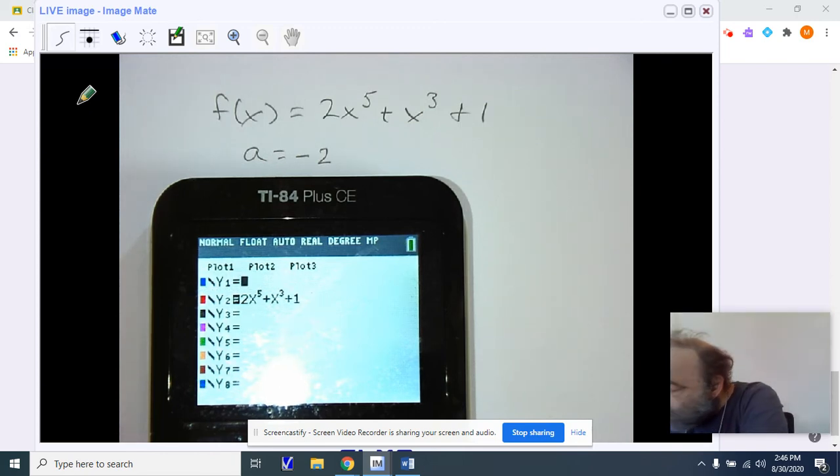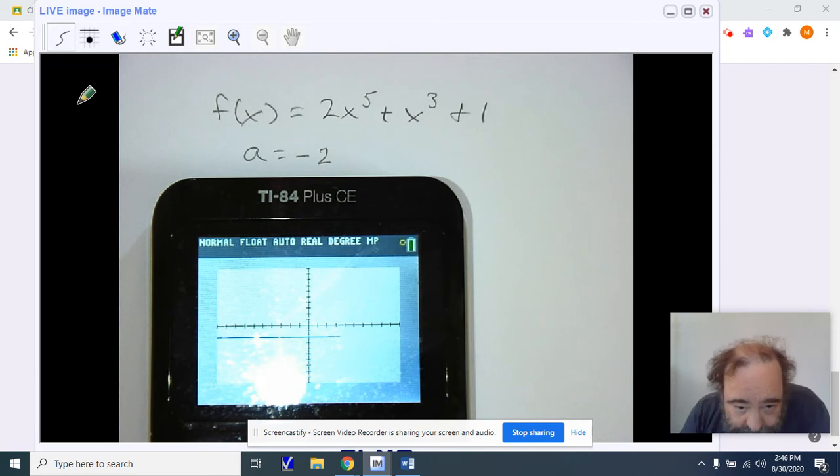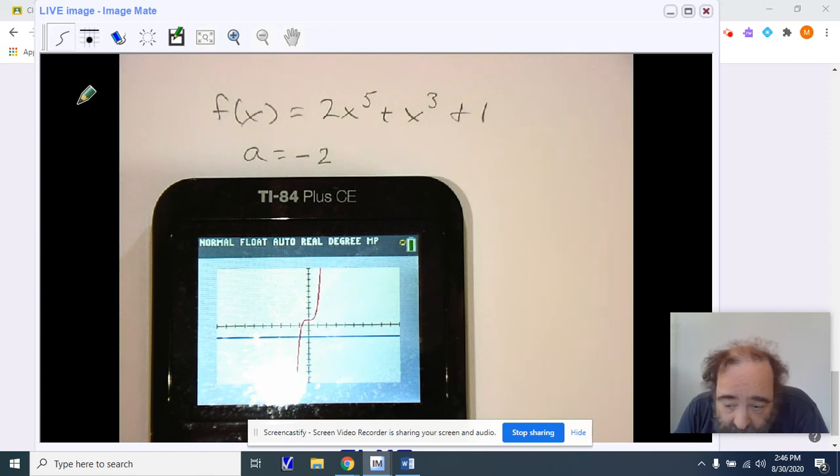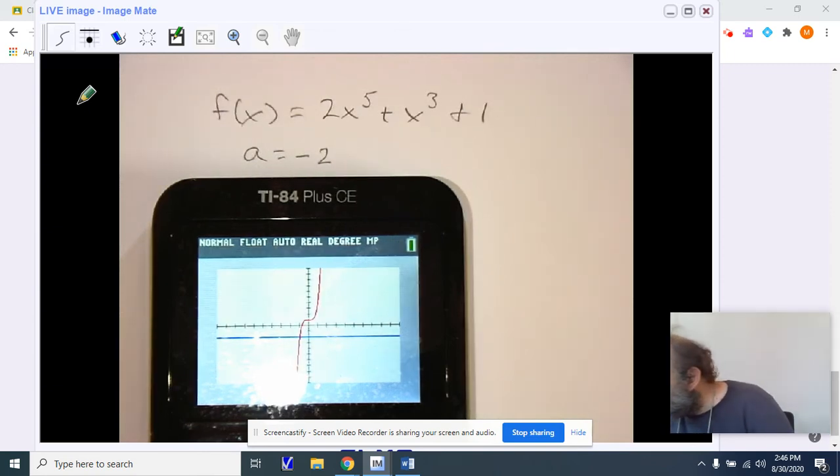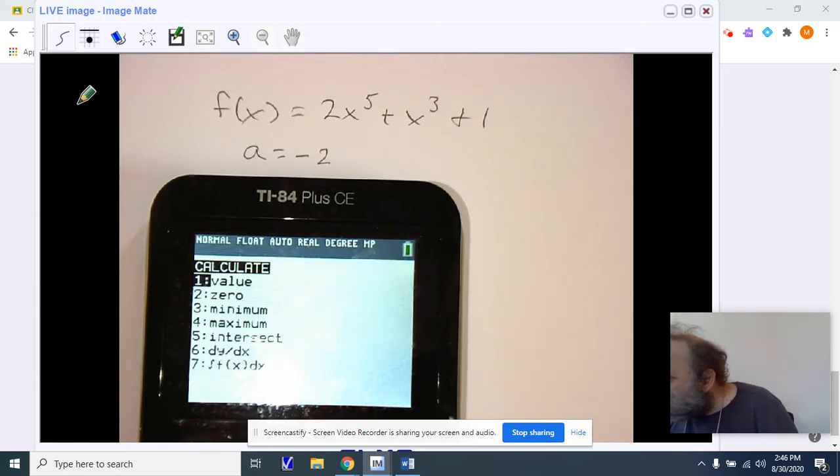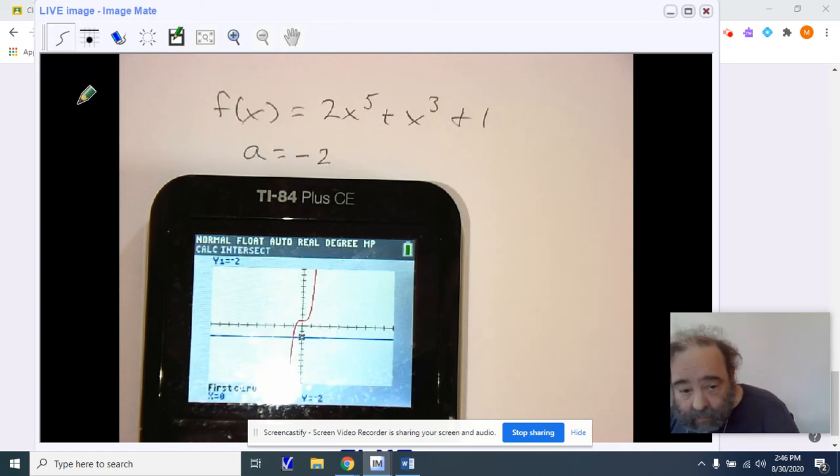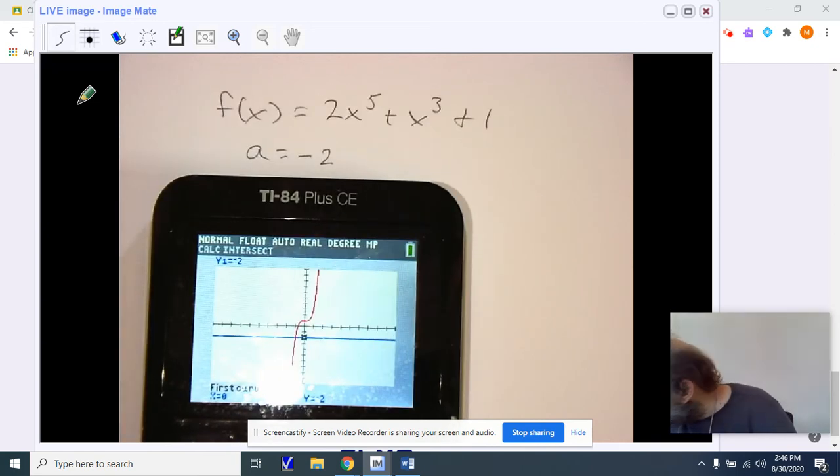Then we're going to go ahead and put the negative a, which is negative 2, which is our a. And I'm going to graph them. Notice there is only one point of intersection. To find that point of intersection, we are going to go second trace. Calculate the intersection, 5. And then we're going to go to our two equations with enter, enter, enter.